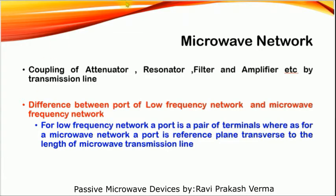Low frequency networks can be represented as two-port networks and characterized by parameters such as impedance, admittance, voltage gain, and current gain. These parameters relate to the total voltage and current at the two ports. For microwave frequency networks, it depends on the power gathered at any port with respect to its input. At microwave frequencies, the logical variables used are the traveling waves with their associated powers, rather than total voltage and total current.